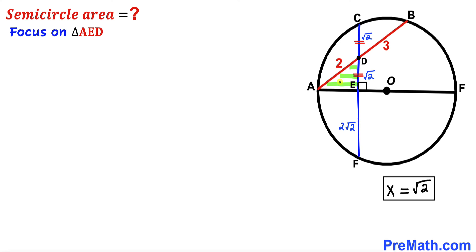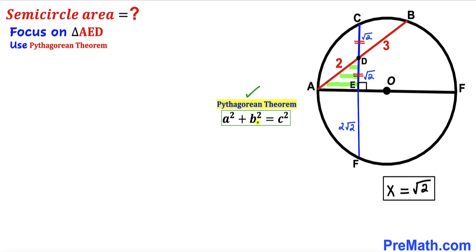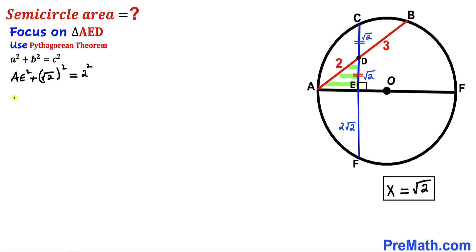Now let's focus on right triangle AED and apply the Pythagorean theorem: A squared plus B squared equals C squared. We want to find length AE. The hypotenuse is AD, which is 2. Filling in the formula: AE squared plus (square root of 2) squared equals 2 squared.